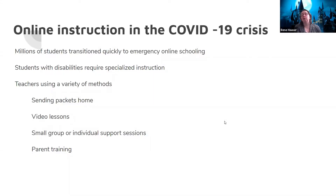So first of all, let's talk about why we're here. We're here because of COVID-19, which has forced millions of students across the country to transition very quickly into emergency online schooling. This is different from traditional online instruction, where the teacher has prepared and formatted things specifically for online instruction. Emergency online schooling means there's very little or no preparation time. We still have millions of students with disabilities that require specialized instruction, and those needs still need to be met.